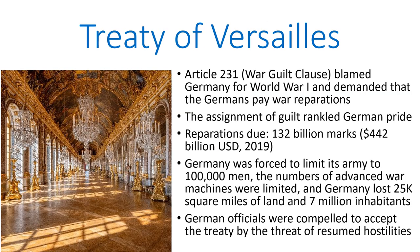From the outset, the Treaty of Versailles was controversial. One of the articles was Article 231, the so-called War Guilt Clause, where Germany had to agree to take responsibility for starting the war, and because of their confession of guilt, they would then be required to pay war reparations to the victorious Allies — mostly Britain, Belgium, and France.